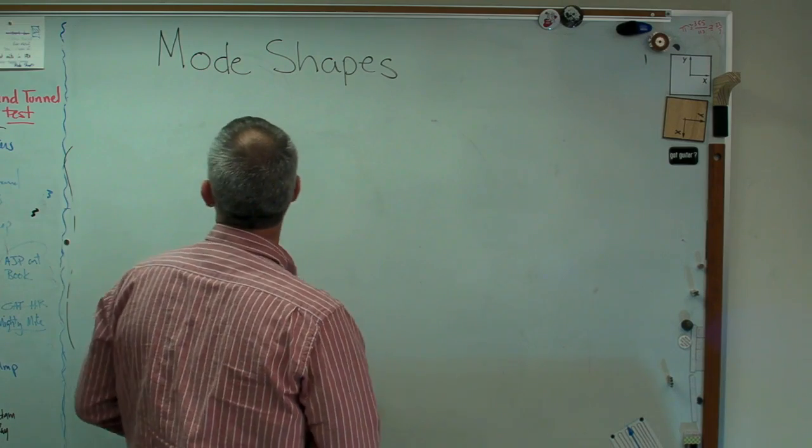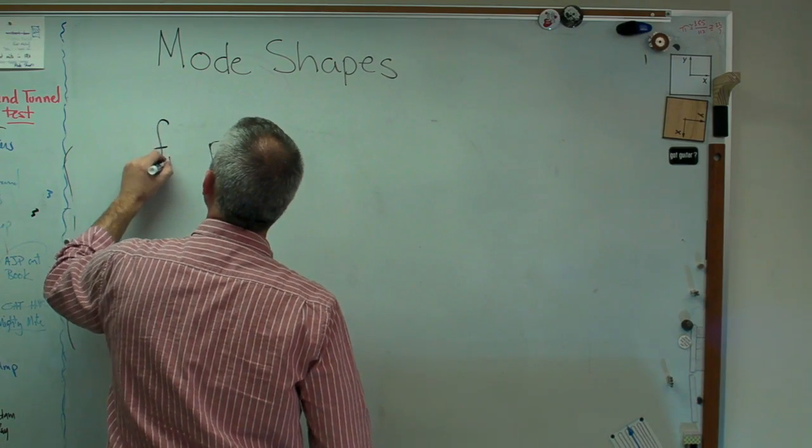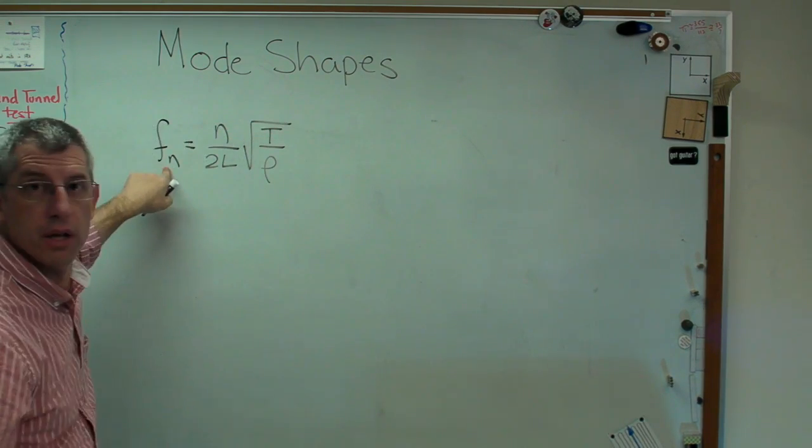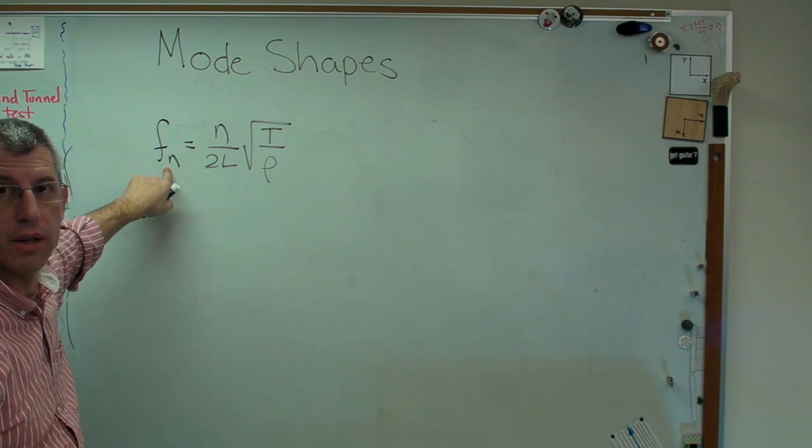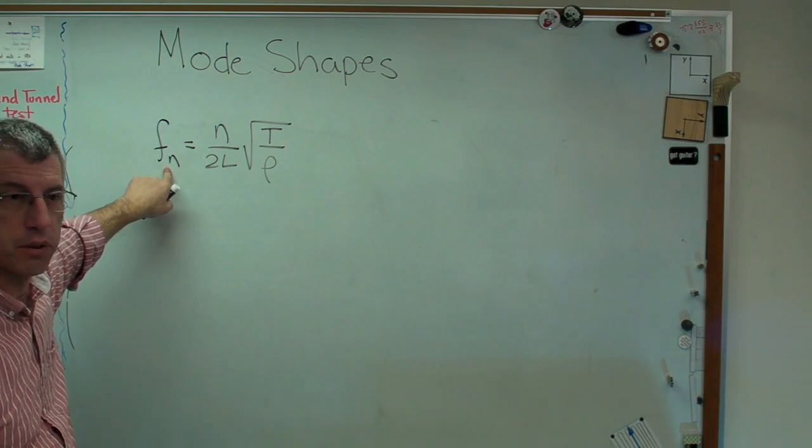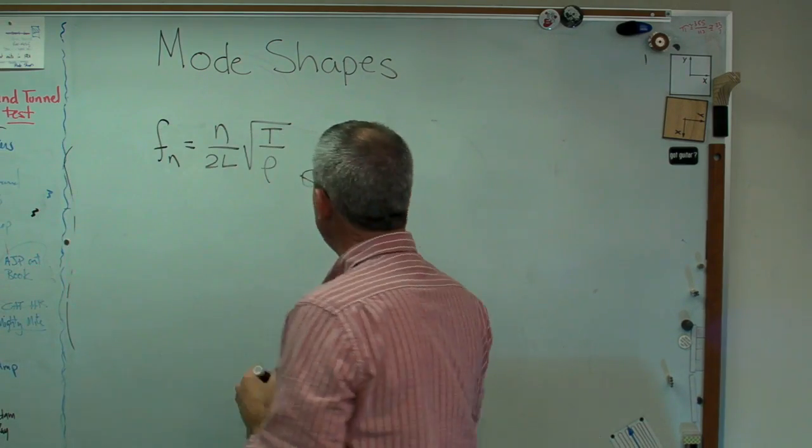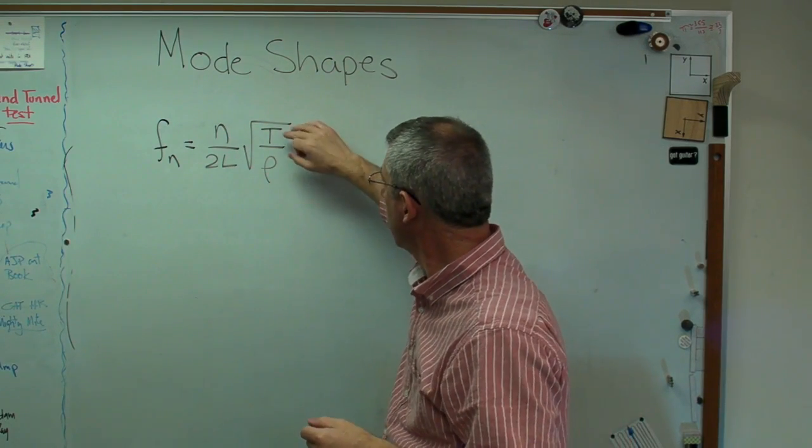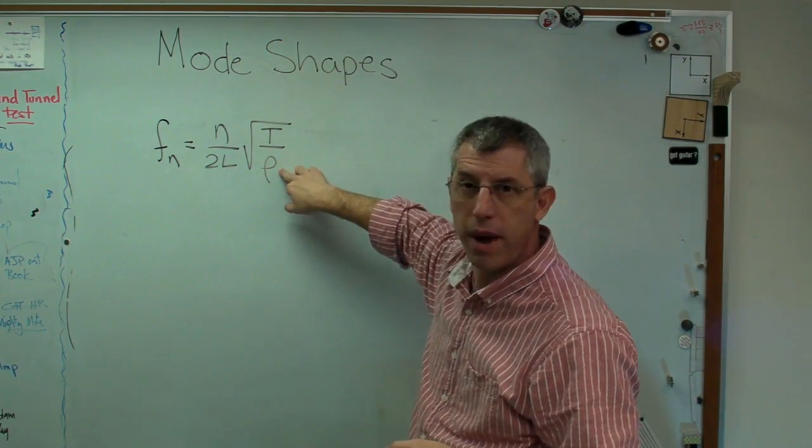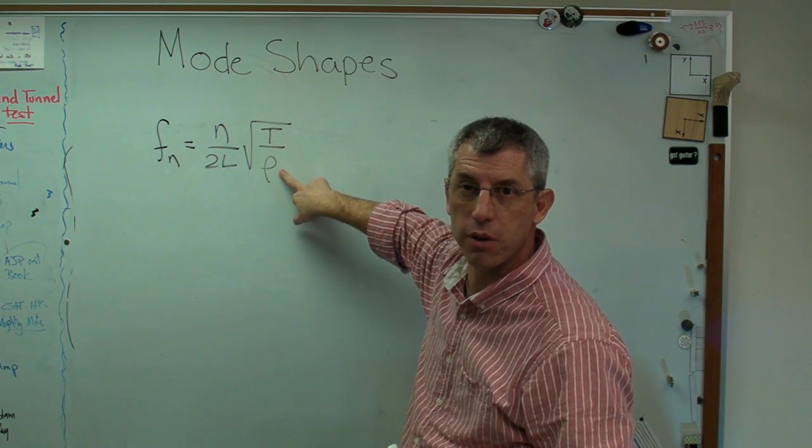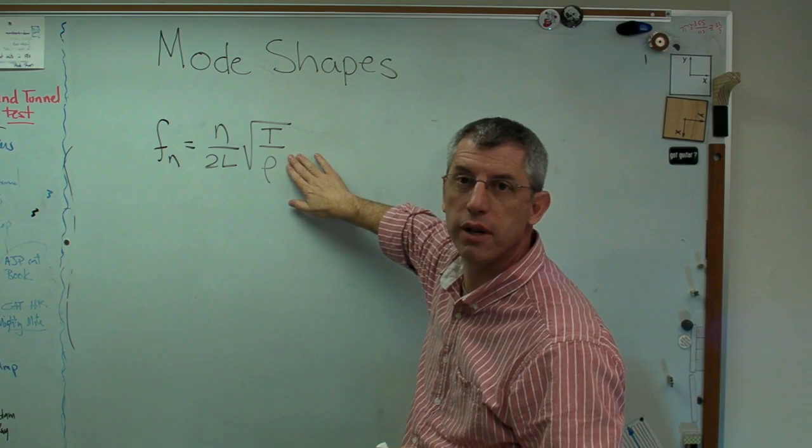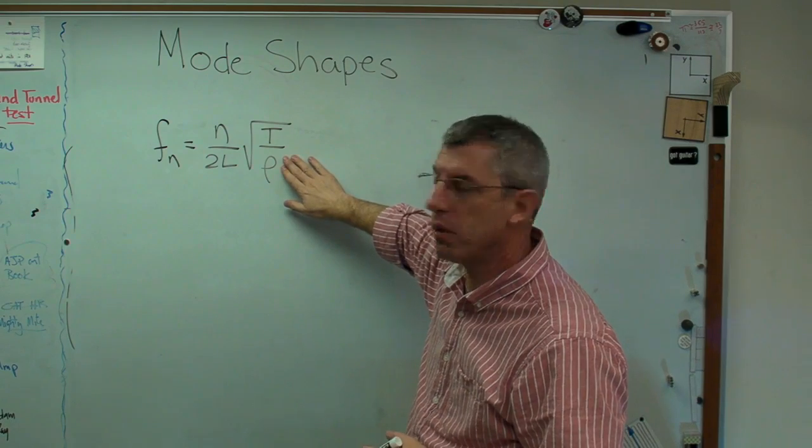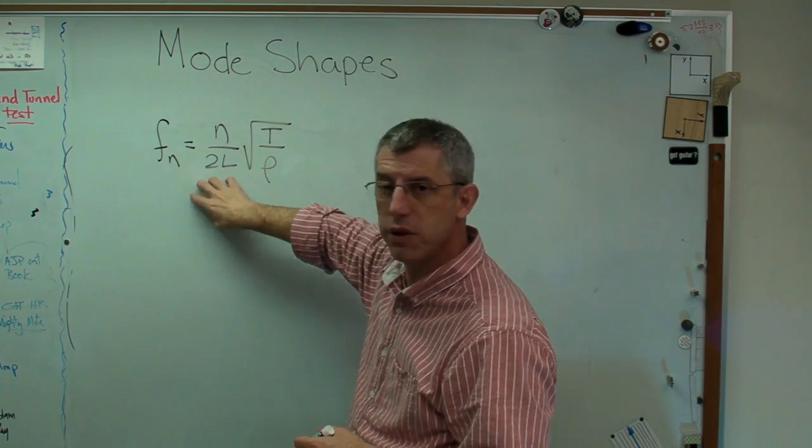So the resonant frequencies for a string are in hertz n over 2l square root of t over rho. So that f sub n, n is the nth resonant frequency, so one is the first resonant frequency. We often call that a fundamental. n is an integer here. 2 times the length, so the length is just the distance between the end points on the string. That's tension and that's mass per unit length. Now it's not mass per unit volume, it's mass per unit length. So don't get confused there. There's only what, 23 letters maybe in the Greek alphabet. Now you have to reuse them once in a while. This is one of those cases. So these are the frequencies of a stretched string. What about the mode shapes?